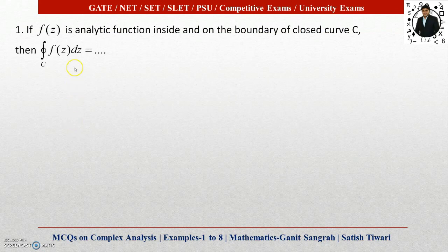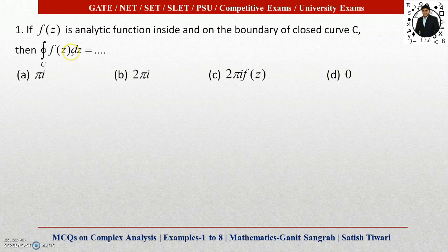Let us proceed with example number one. If f(z) is an analytic function inside and on the boundary of a closed curve C, then the integration over the closed curve C of f(z) dz — this is the statement of the Cauchy residue theorem. If the function is analytic and no pole lies inside, the value of the integral is zero. So option D is correct. If a pole lies inside the closed curve, then we calculate the residue and find the integral value accordingly.